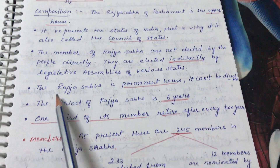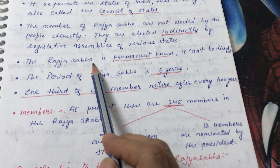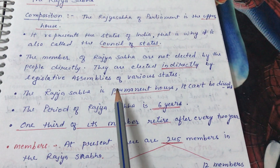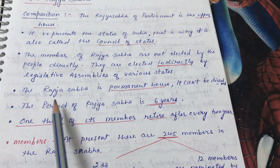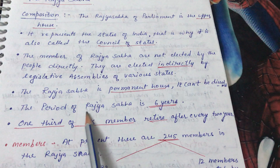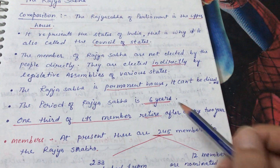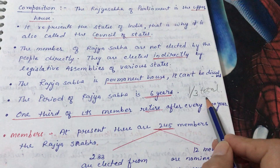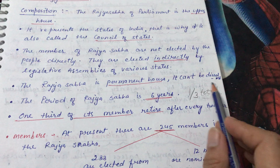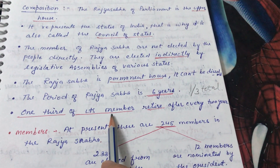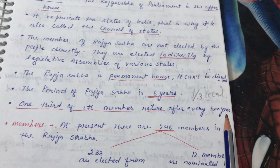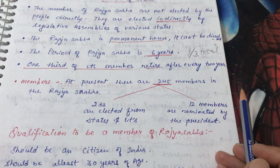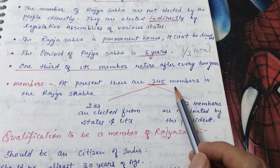Rajya Sabha is a permanent house — it cannot be dissolved. Lok Sabha dissolves after every five years and elections are held again, but Rajya Sabha is permanent. The term of a Rajya Sabha member is six years, and one-third of the total members retire every two years. So over six years there are three rounds of retirement, which is why it is never dissolved.